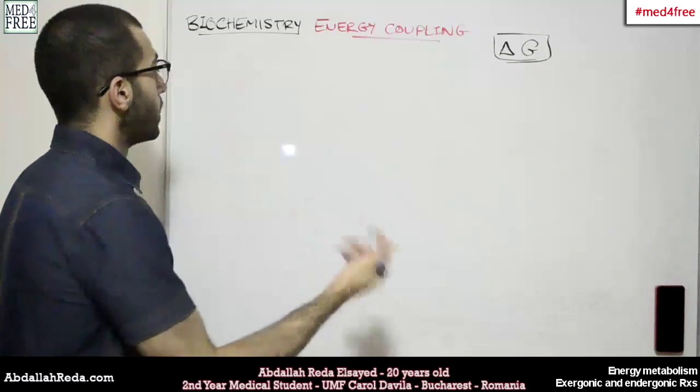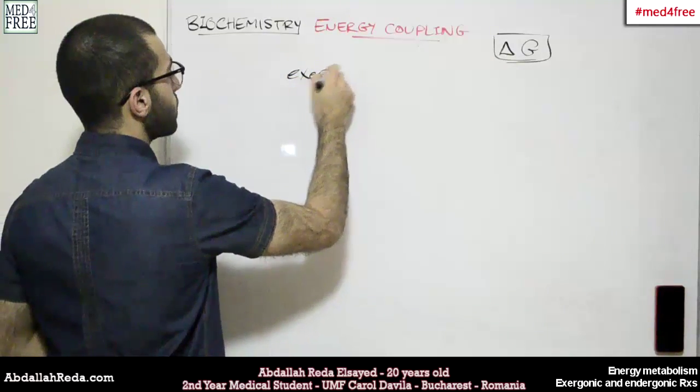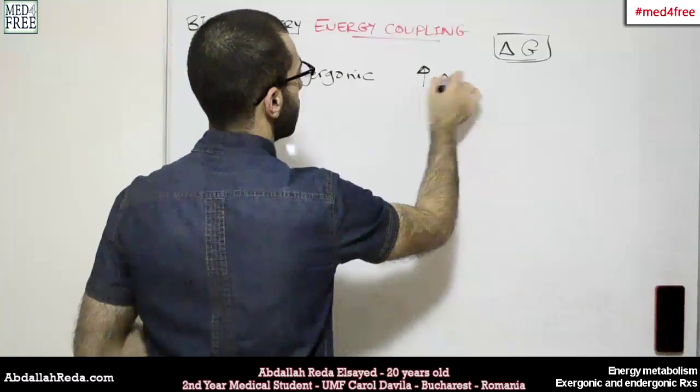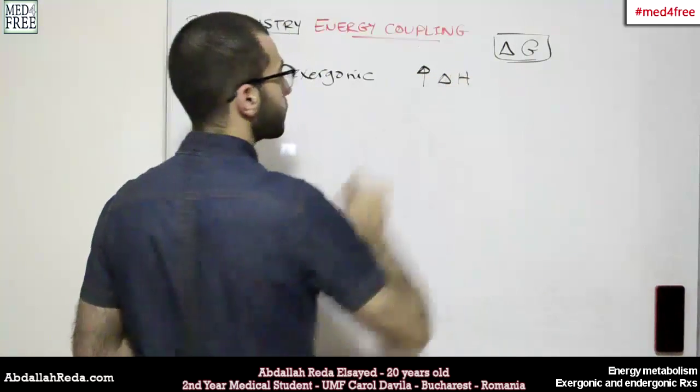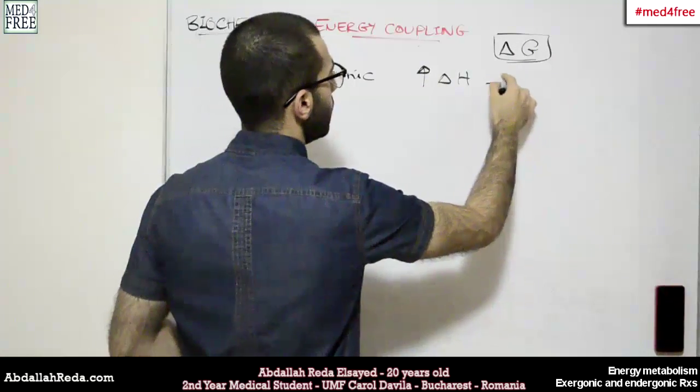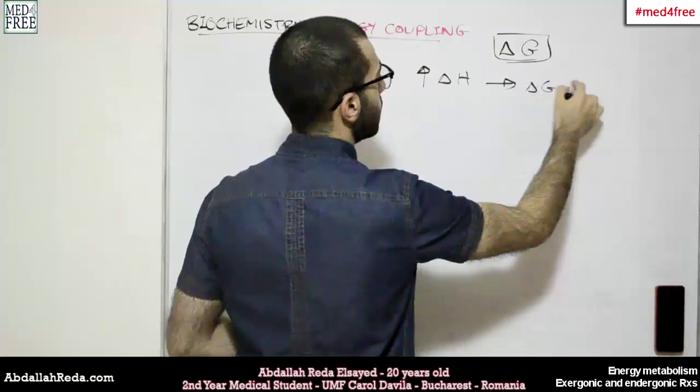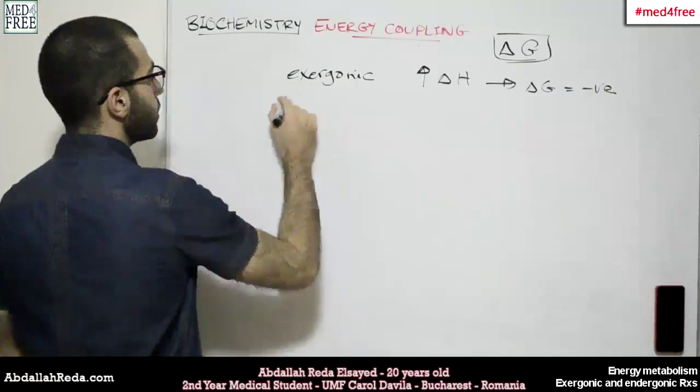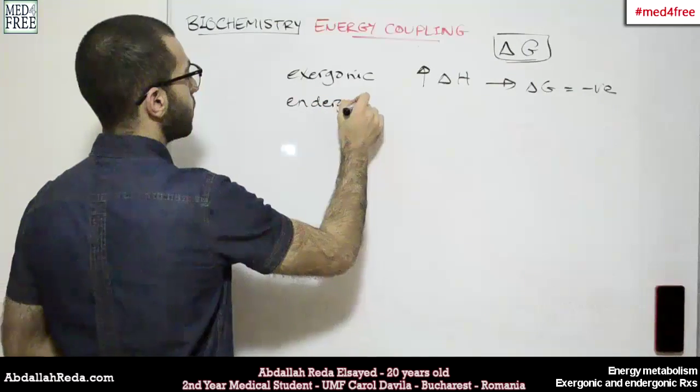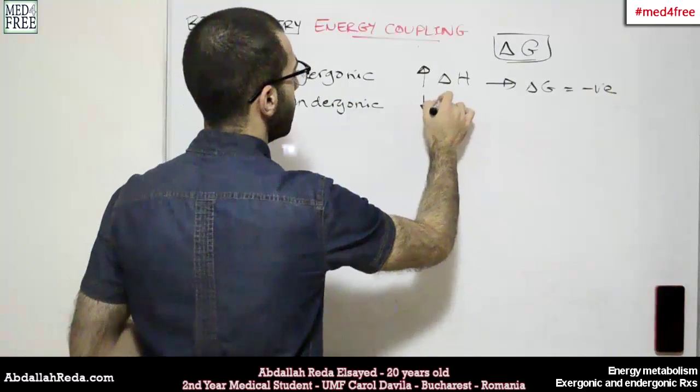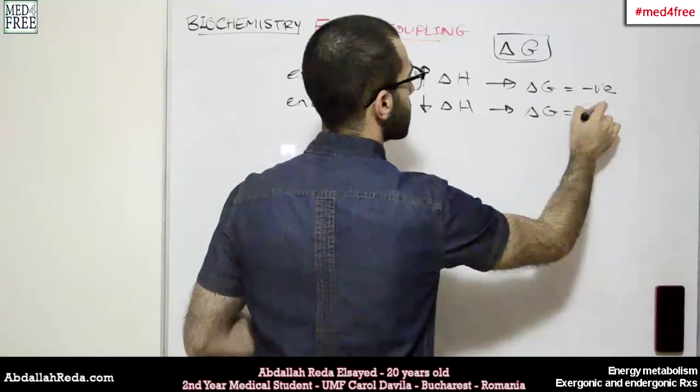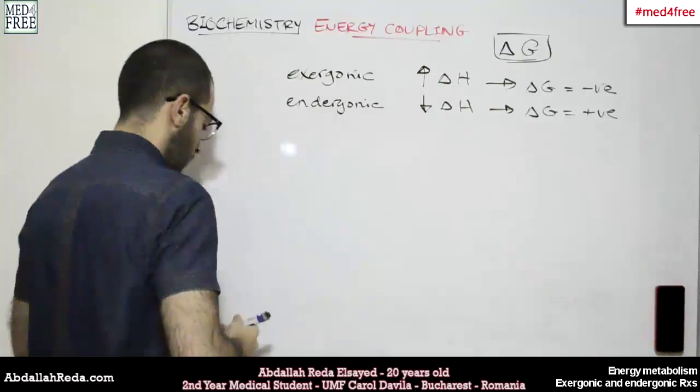We said that exergonic reactions will give heat and so the delta G will be negative. And that endergonic reactions will take in energy and so the delta G will be positive.